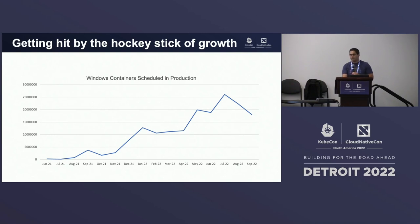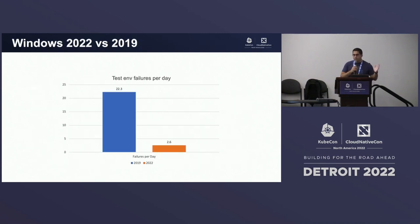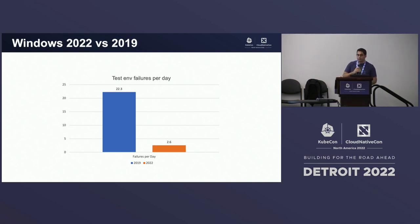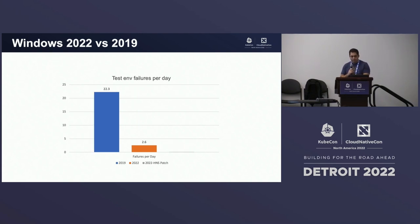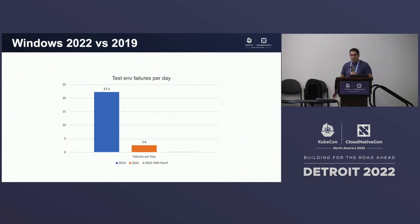Switching to Windows Server 2022 instead of 2019 in one of our test environments caused our failures per day to drop from 22.3 to only 2.6 — pretty huge, with no other change other than switching the OS. The code and number of containers was exactly the same. We're running on ContainerD for both 2019 and 2022. Once we have the HNS patch we're about to demo, we've cut down to 0.14 failures in that test environment.